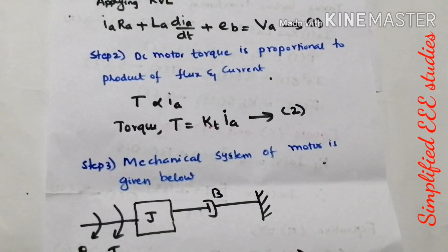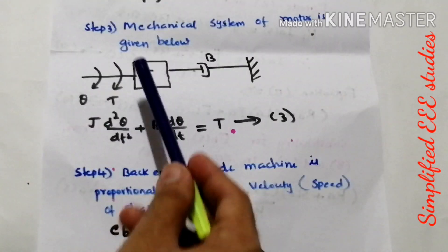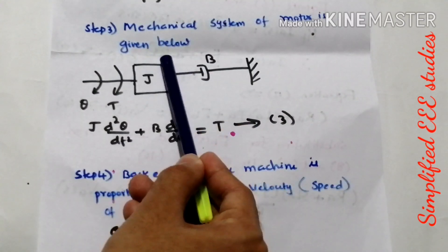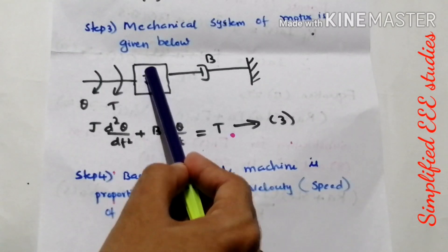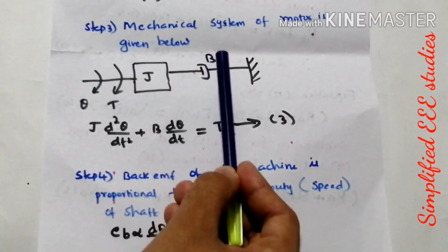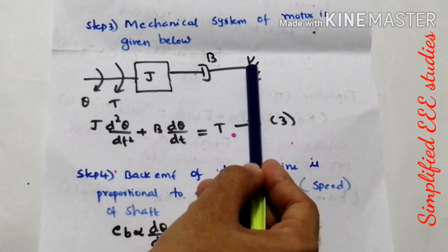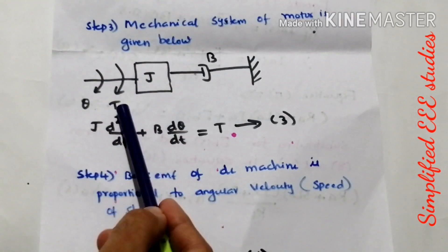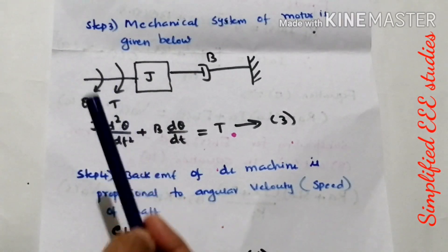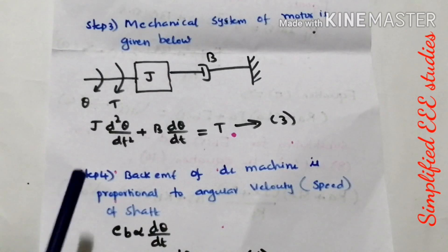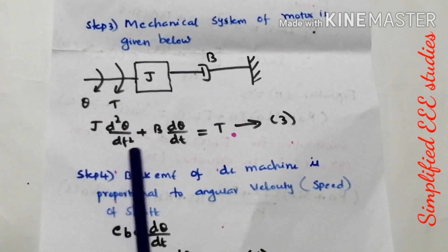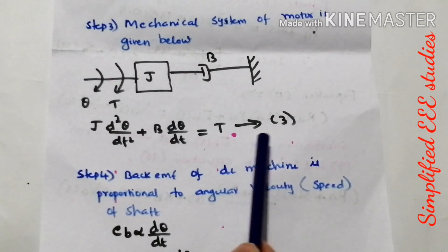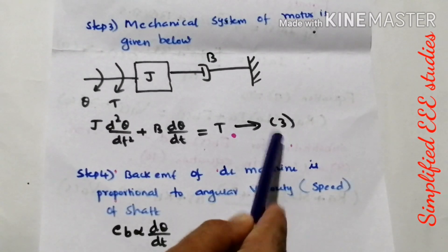Now coming to the third step, this is regarding the load part — the mechanical system of the motor. J is the moment of inertia, B is the damper or dashpot, theta is the angular displacement, and T represents torque. Applying Newton's second law: J·(d²θ/dt²) + B·(dθ/dt) = T. Please call this equation number 3.